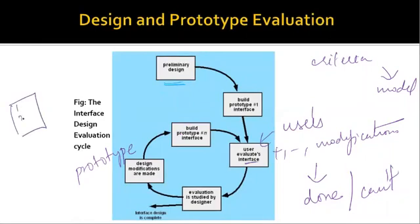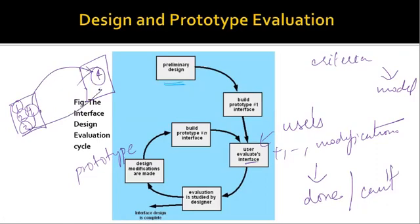Suppose this prototype has modules one, two, three, four. If only modules four and three are needed in the new system, they are picked and placed in the new prototype, along with new modifications like module five. This entire process is repeated until the entire design is completed. In the second cycle the same process continues — the user evaluates the interface, and if no further changes are needed the designer finalizes the design and the interface design phase comes to an end.